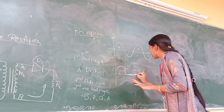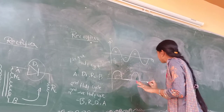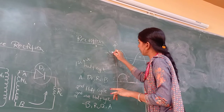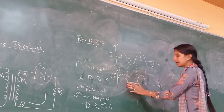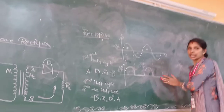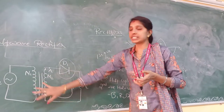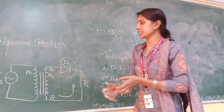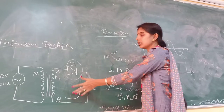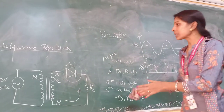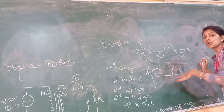Coming to the advantages of the half-wave rectifier: it allows the positive half cycle and blocks the negative half cycle. This is the input of the half-wave rectifier and this is the output. The construction is very simple and low cost compared to other rectifiers. These are the advantages. But the disadvantage is that half of the cycle is blocked, which is why we move to the full-wave rectifier.